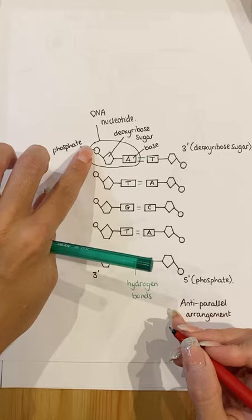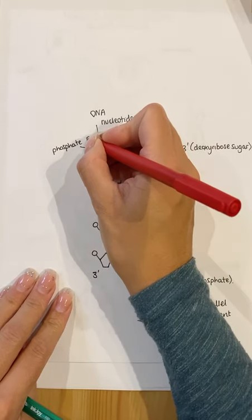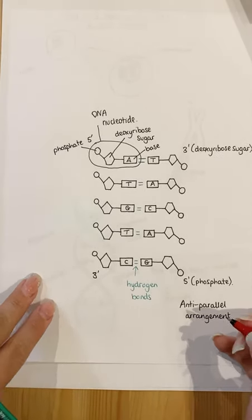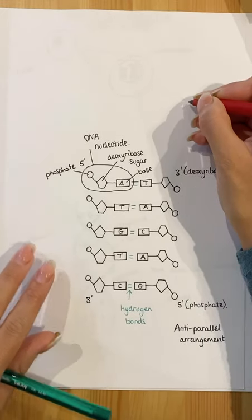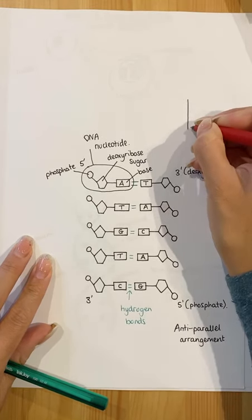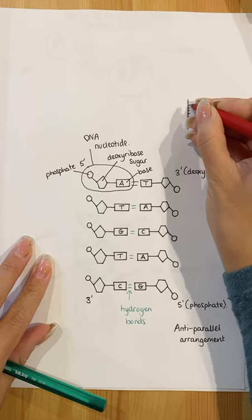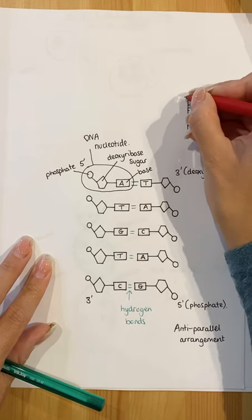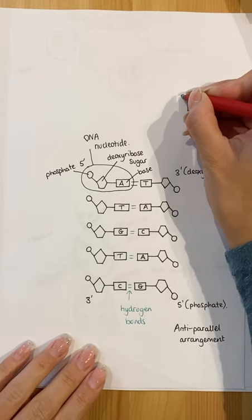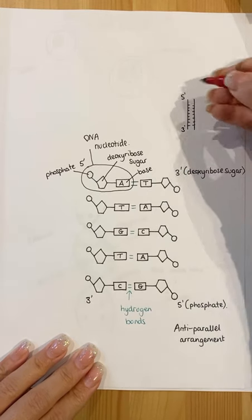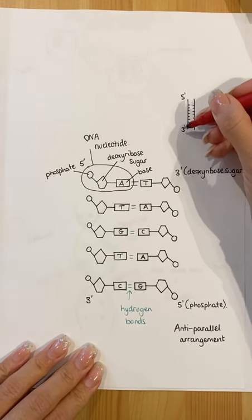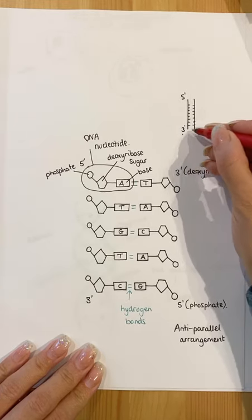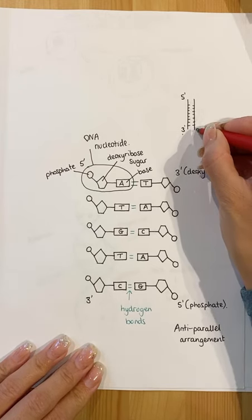If you work your way along, this therefore ends in a phosphate, so it would be your five prime end. You might get a more simplified diagram, just looking straightforwardly at it, which would show you a very simple molecule of DNA. When you look at this diagram and it gives you the ends, it should always be five prime one end, running down to the three prime on the other end. Because this is an anti-parallel arrangement, the other end should be the opposite way around.